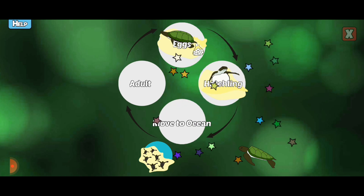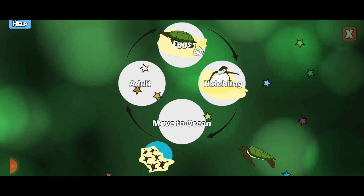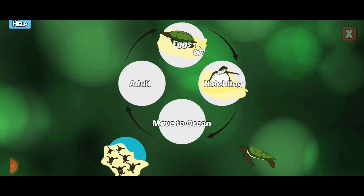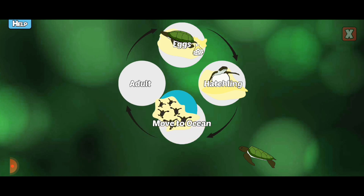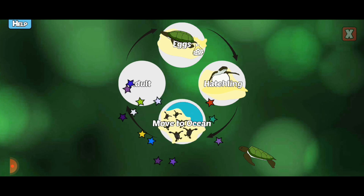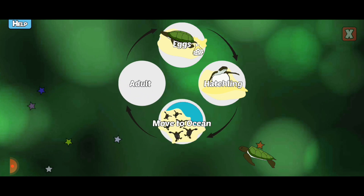Babies are completely independent at birth and will never see their mothers. After emerging from the nest, hatchlings must crawl to the water as quickly as possible.